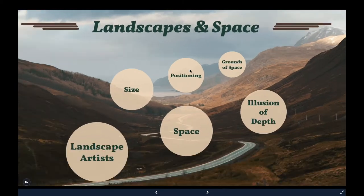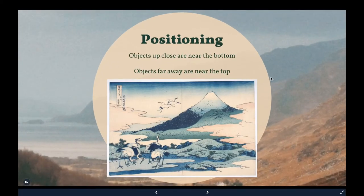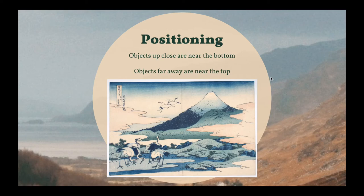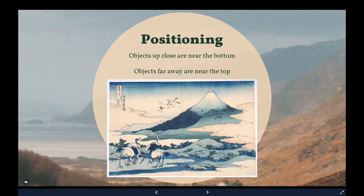Next, let's look at positioning. Positioning means that objects up close are near the bottom of the picture plane. Objects far away are near the top. If I'm looking at this Hokusai artwork, the birds are at the bottom of the picture plane, so they appear closer. And the mountain and the sky are farther away, so they are near the top. We even have birds that are flying away — they're not much smaller than the birds in the front, but they appear farther away because they're near the top.